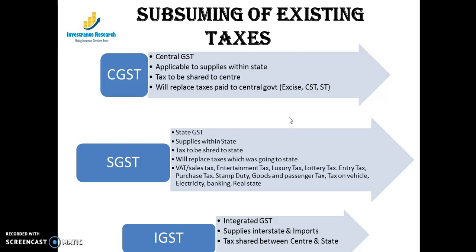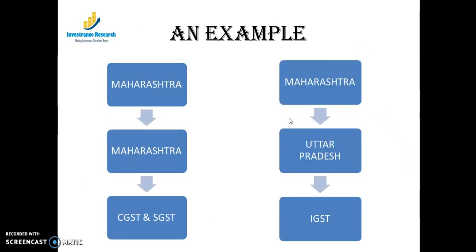SGST is the State GST, also applicable to supplies within a state, but the taxes collected go entirely to the state government. It will replace taxes like VAT, entertainment tax, luxury tax, lottery tax, and other stamp duties that state governments were charging manufacturers and service providers. IGST — Integrated GST — applies to interstate supplies between two different states and also to imports, with revenue shared between the center and the states.